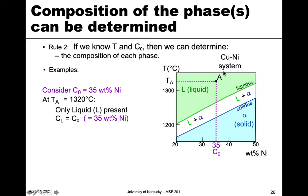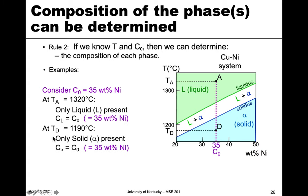At temperature A, we're up in the all-liquid region. So the composition of the liquid, C-L, equals the overall composition because all the nickel and copper are in the liquid — that's 35 weight percent. At temperature D, down in the all-solid region, only alpha is present. In the same way, the composition of alpha equals the alloy composition C-naught, which is also 35 weight percent.